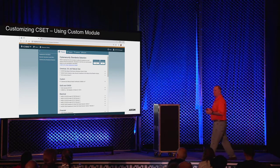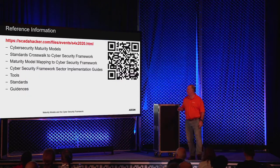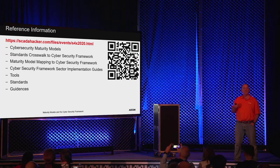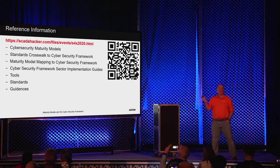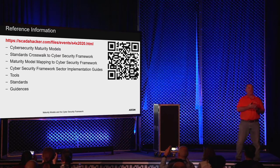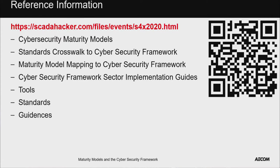All of the documentation I've referenced is going to be on a timed page at a QR code at the end of the presentation on Skateahacker.com. Some of those crosswalks and ways the tool has been used for specific sectors like dams or oil and natural gas are all on that page. It's currently set to expire in two weeks, though that can be turned off depending on how Dale and the team want to manage it with the overall website. That little spreadsheet I showed is one of the links on there.